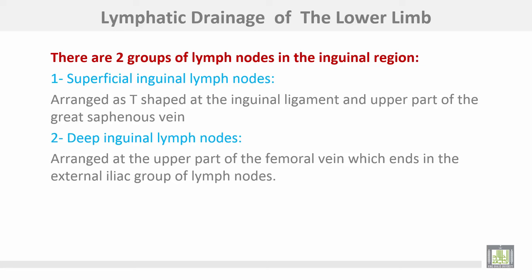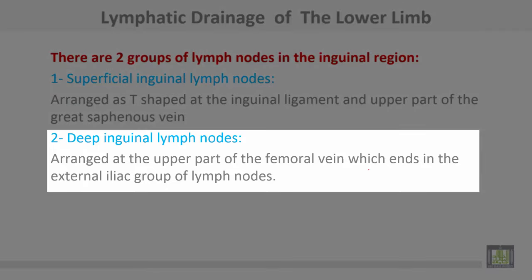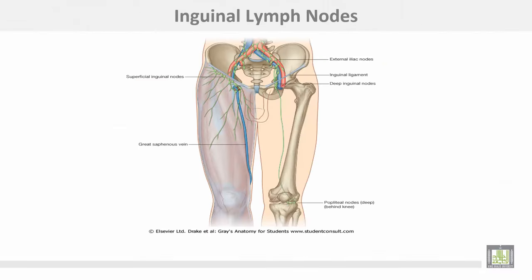Lymphatic drainage of the lower limb: there are two groups of lymph nodes in the inguinal region. The superficial inguinal lymph nodes are arranged in a T-shape at the inguinal ligament and along the upper part of the great saphenous vein, with a horizontal part and a vertical part. The deep inguinal lymph nodes are arranged at the upper part of the femoral vein and drain into the external iliac group of lymph nodes.